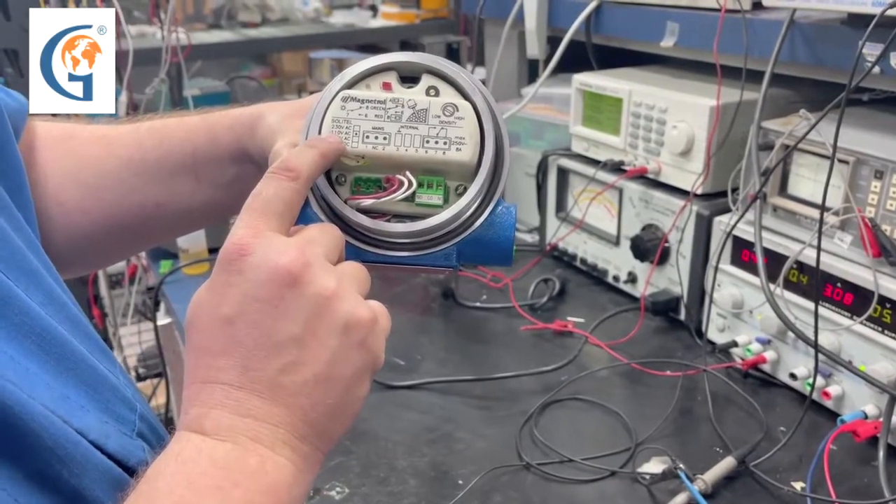First, we have our power connections, which in this case is 110 volts AC. We also have our internal wiring, which goes to our rod level sensor that's inside the rod. And then, we have our external switch.